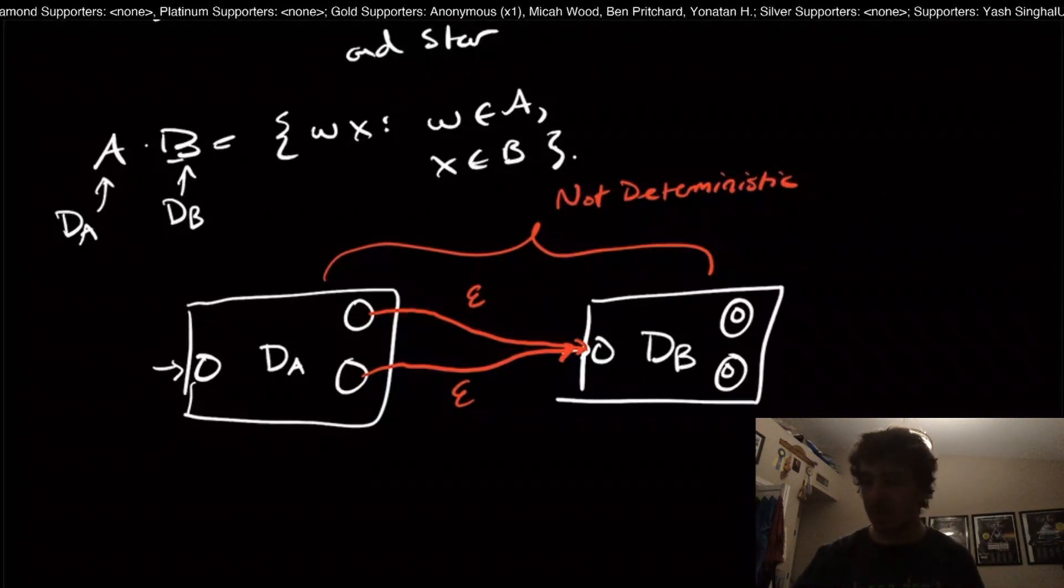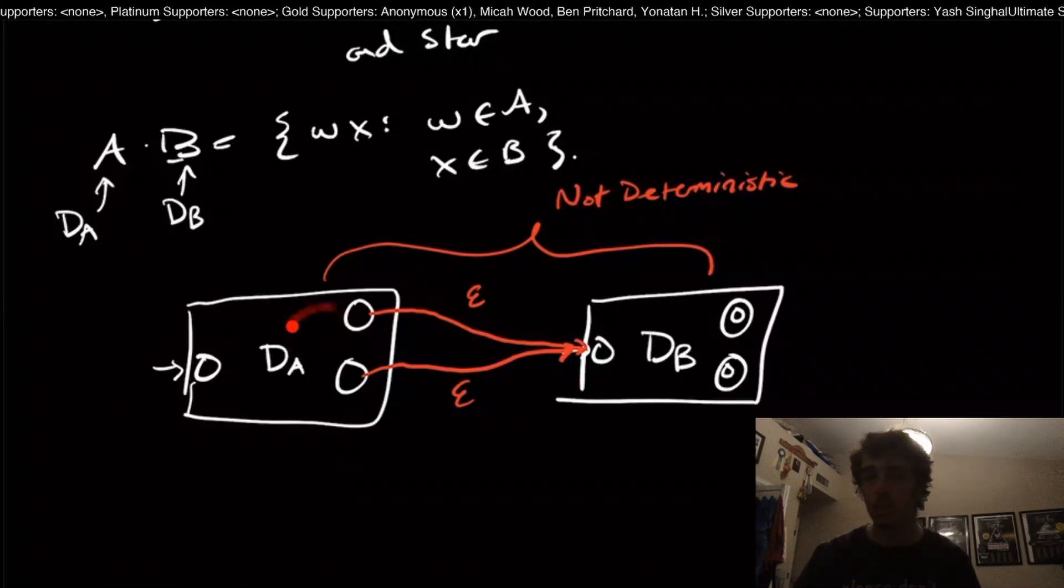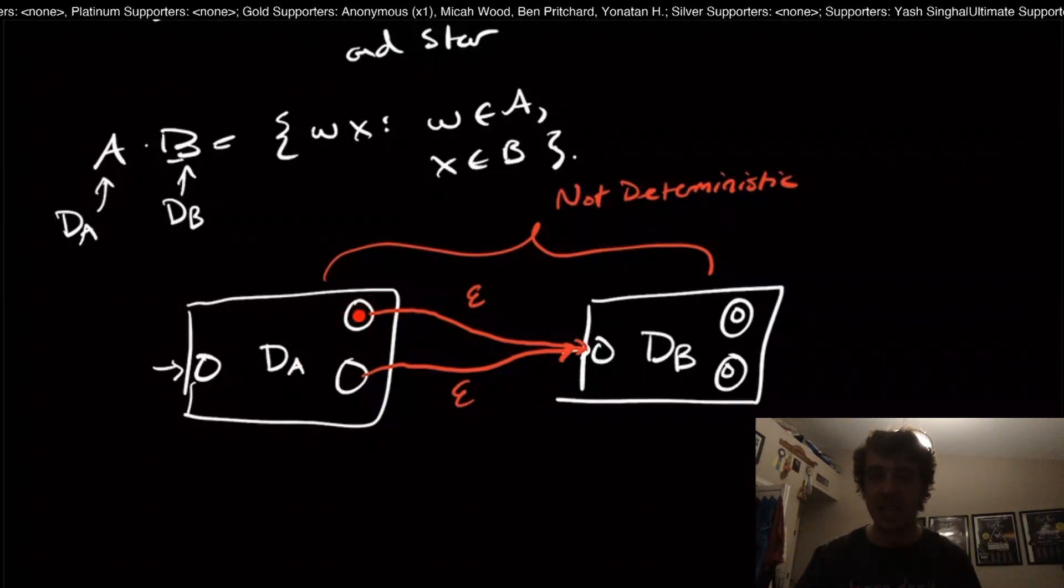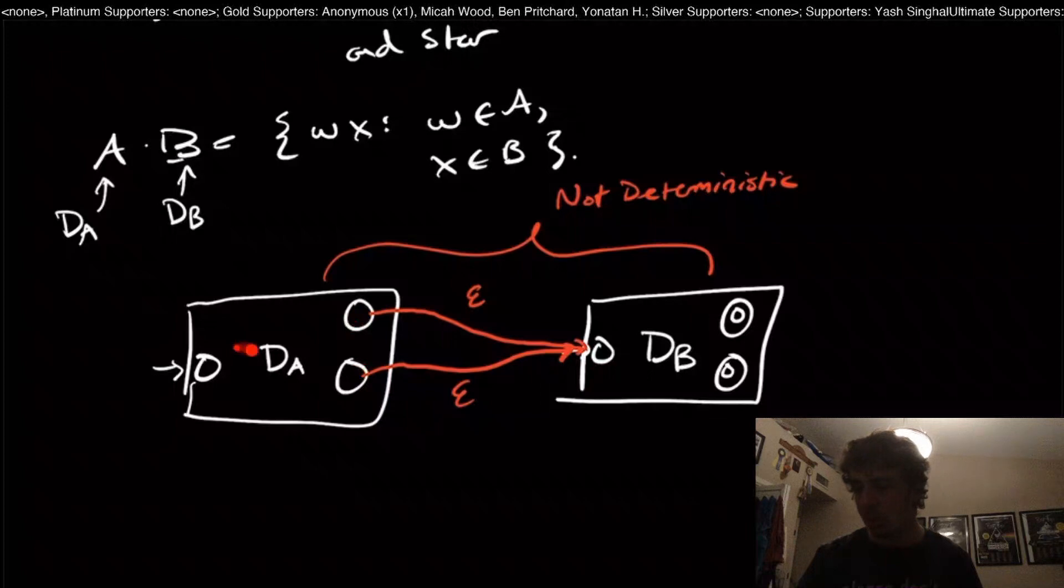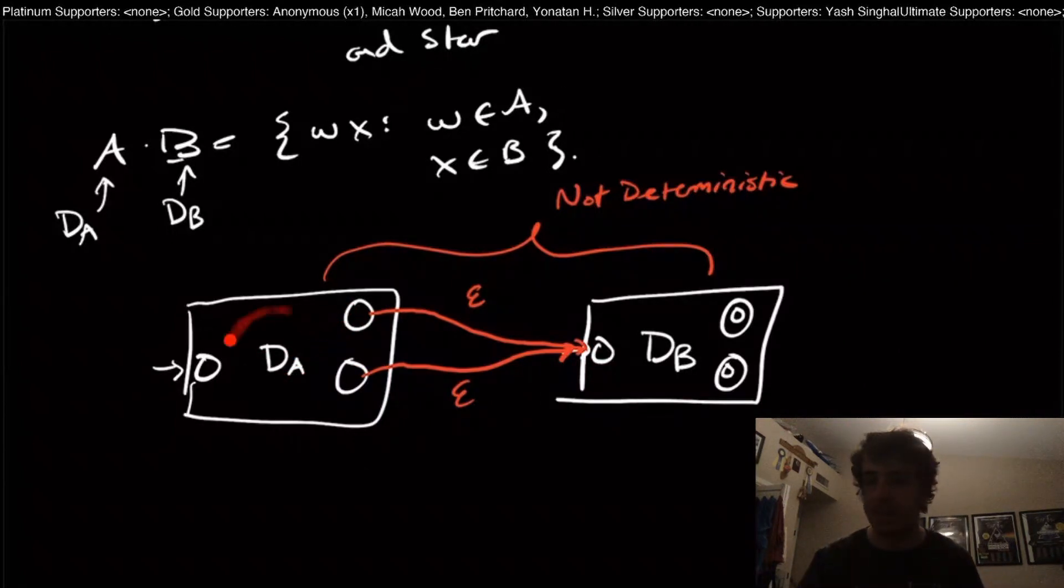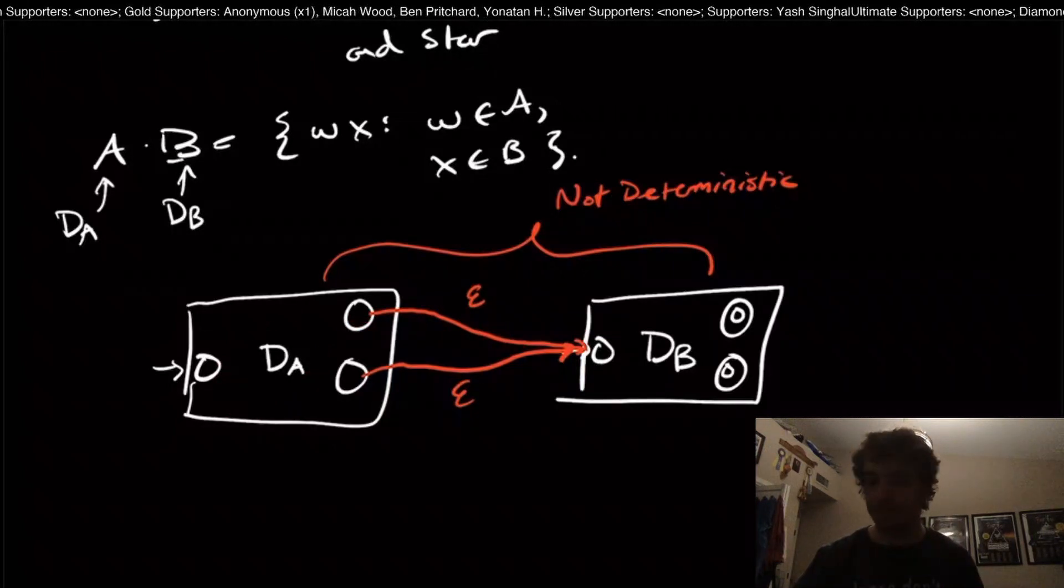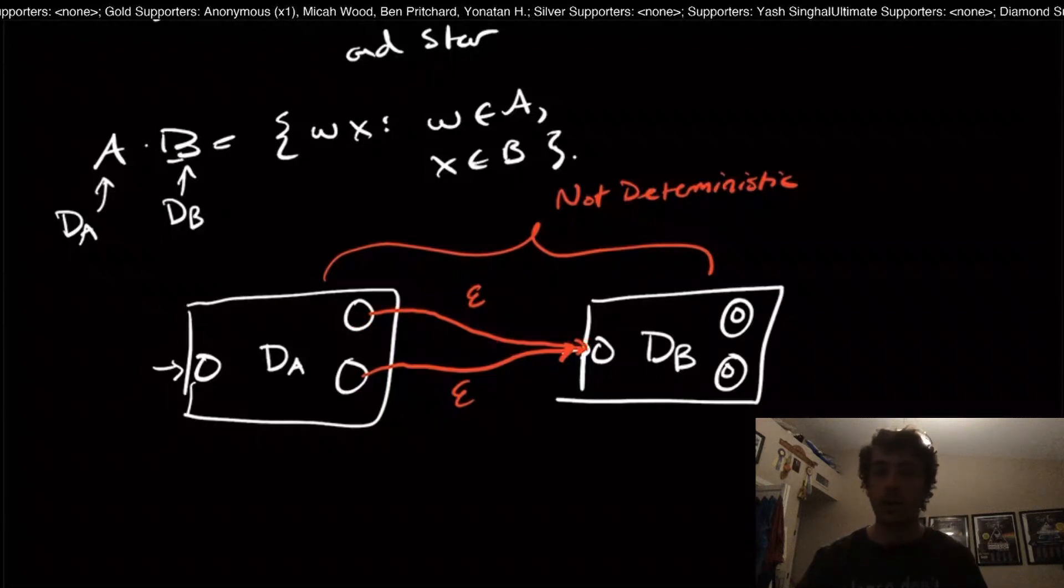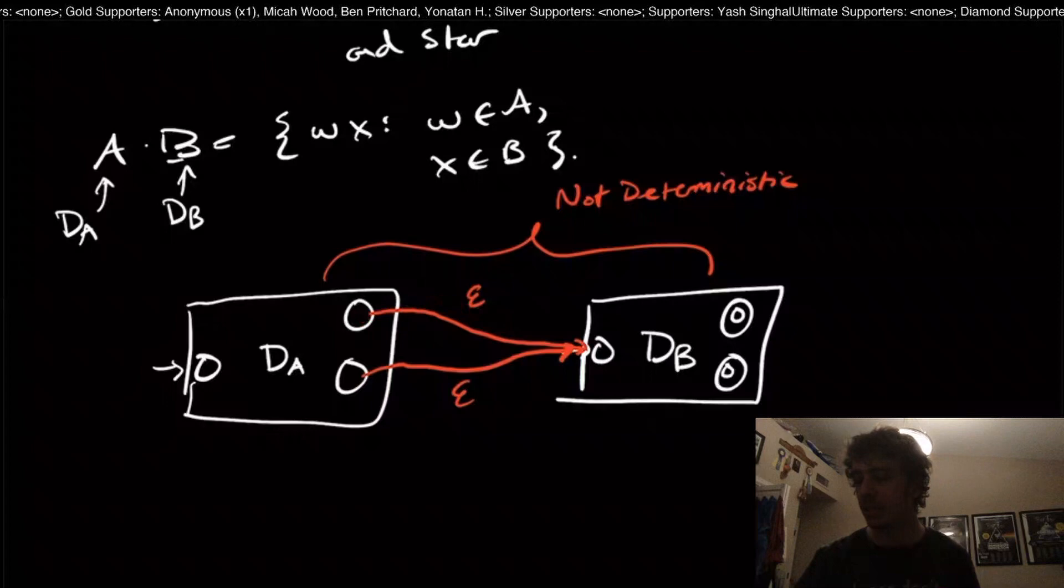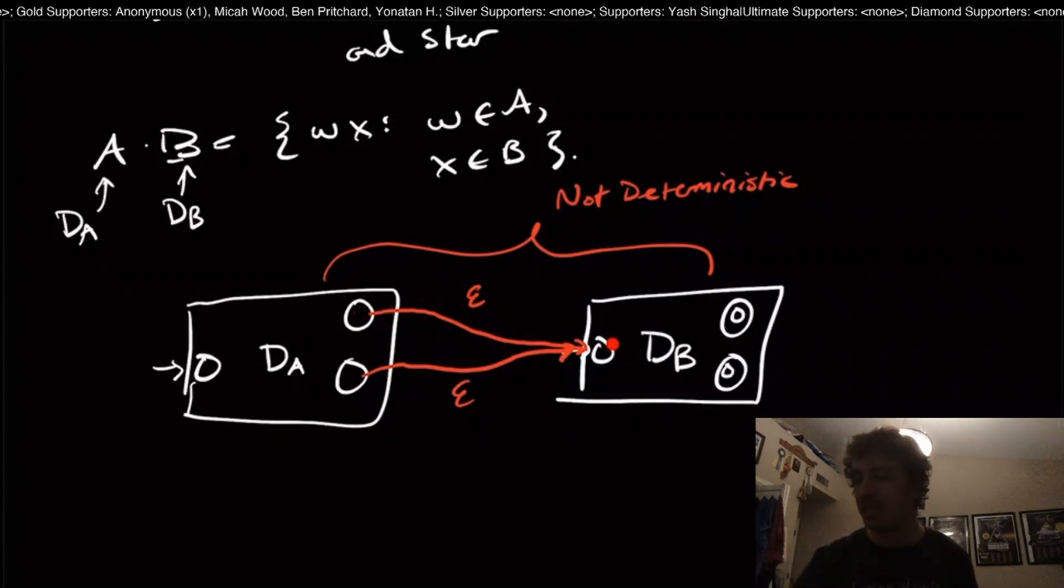This joining of these two machines is not deterministic anymore, because with this transition we're not required to take it. Whatever character's next, I could just take the existing transition over here. Because this thing is a DFA, this state or any state over here has every transition on every symbol already. This transition over to here is extra, so therefore you're not required to actually ever take this transition.